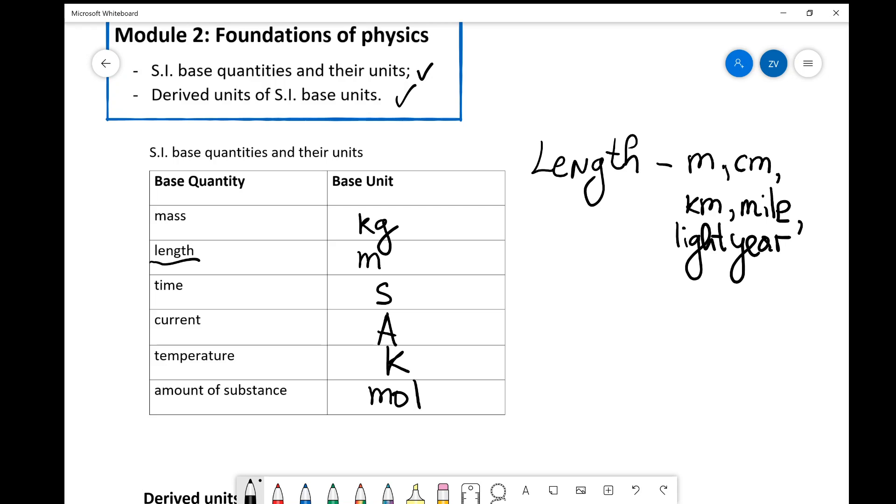So these are fundamental units, they cannot be expressed in terms of each other. One thing to watch out for is that the kilogram is the only base unit that has a prefix. So I'm just going to highlight it over here because the base unit is the kilogram, it is not the gram.